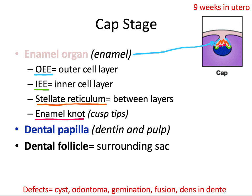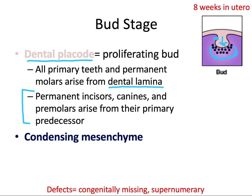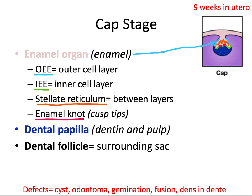Failure in this process could result in congenitally missing or supernumerary teeth if it occurs early on, but more likely you're going to see a cyst, odontoma, gemination, fusion, or dens in dente, depending on the amount of cell differentiation that has occurred.